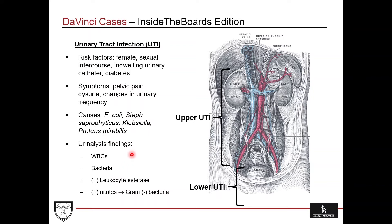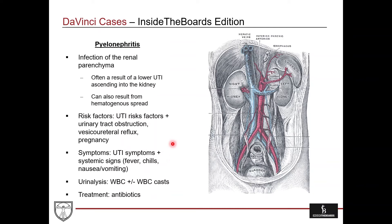As for urinalysis findings, you can see white blood cells, bacteria, positive leukocyte esterase, and nitrites, which can point towards gram-negative bacteria — all of which our patient has. This further points towards a UTI. The issue with UTI is that it can develop into an infection of the renal parenchyma, which is called pyelonephritis. It's often the result of a lower UTI ascending into the kidney — you can see this in the diagram, where a lower UTI ascends up the ureter and then affects the renal parenchyma. It can also result from bacteremia and hematogenous spread of bacteria through the blood from another source.